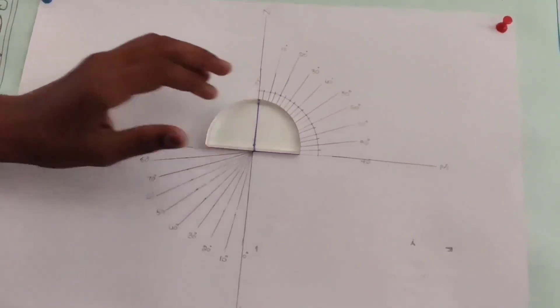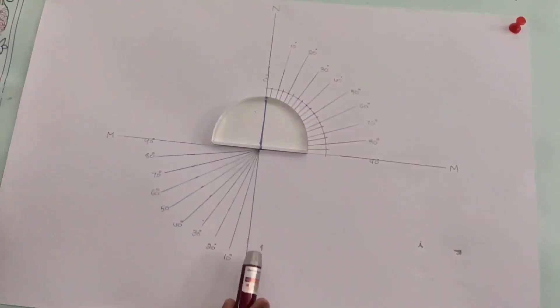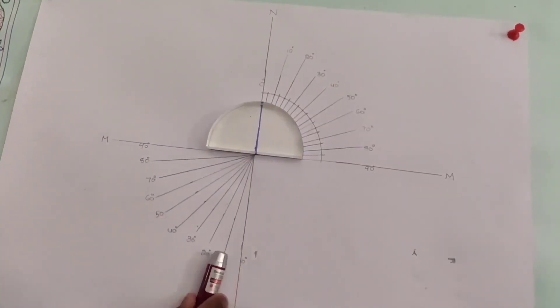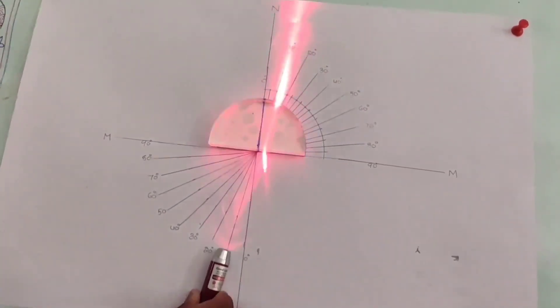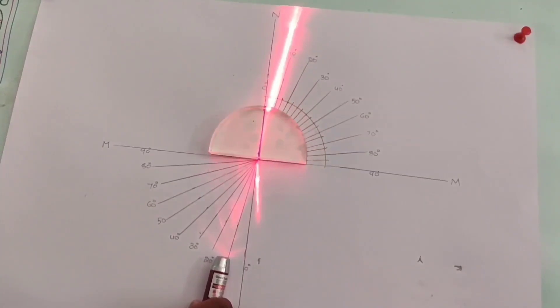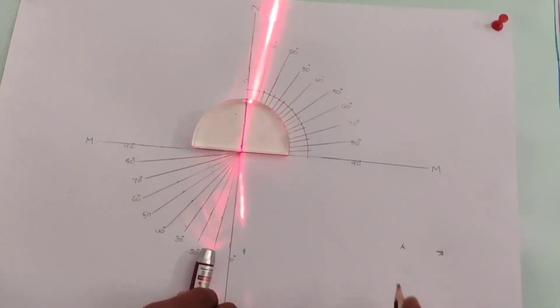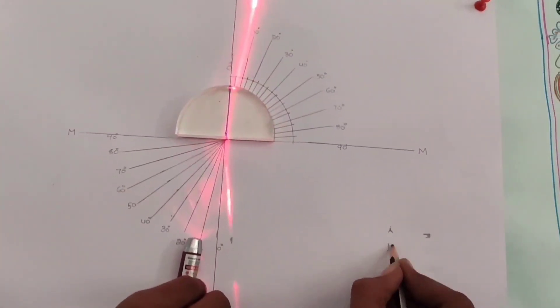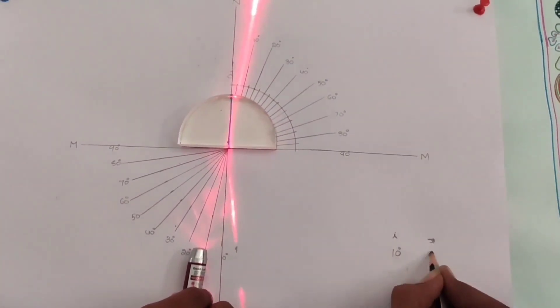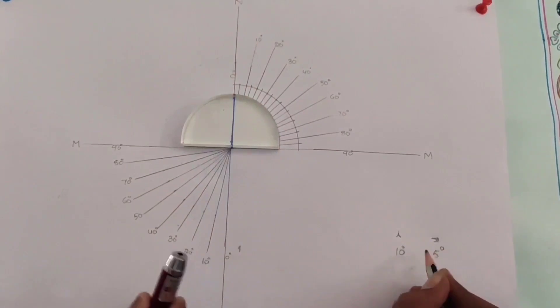Place a semi-circular glass disk so its diameter coincides with the interface line. Send laser light along 10 degrees — this is the angle of incidence.